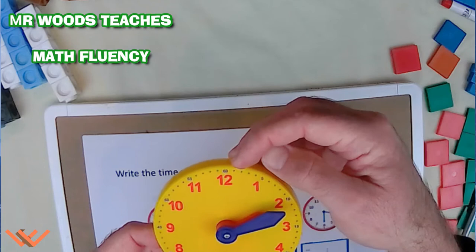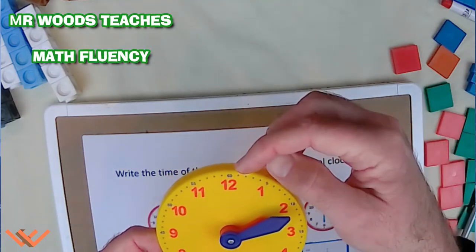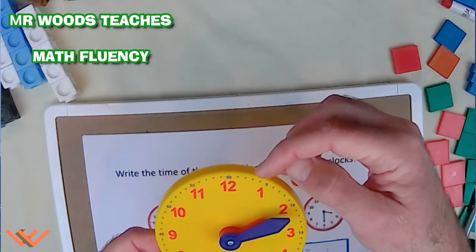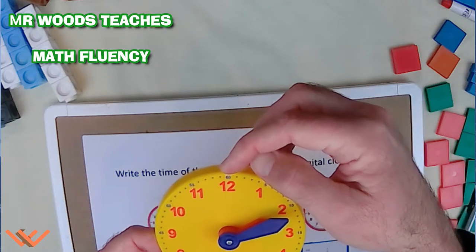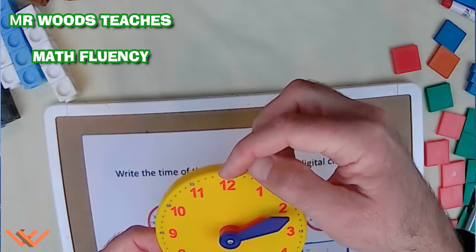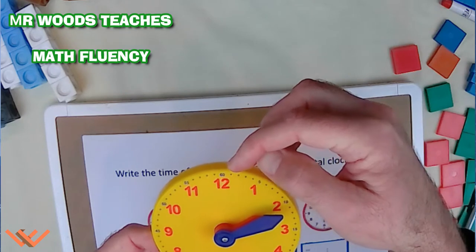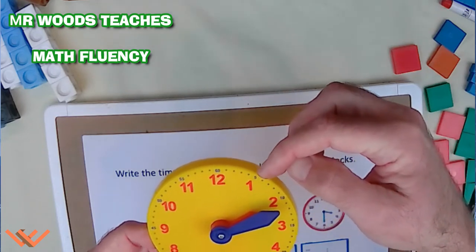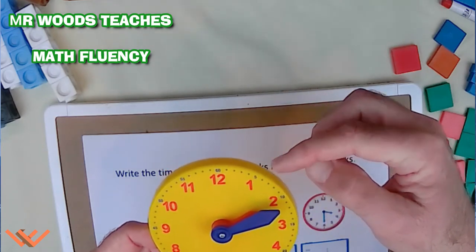And if you notice, there's actually on this manipulative, there's little tick marks here. And that means that there's 5 minutes between each whole number. So start up here at the 12, there's 1, 2, 3, 4, and then you have 5. And you can keep on counting.